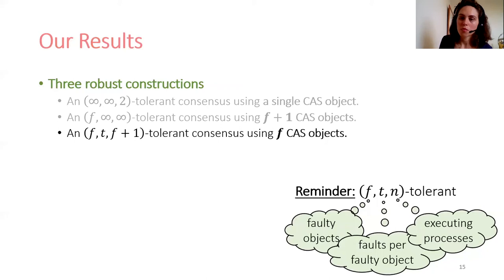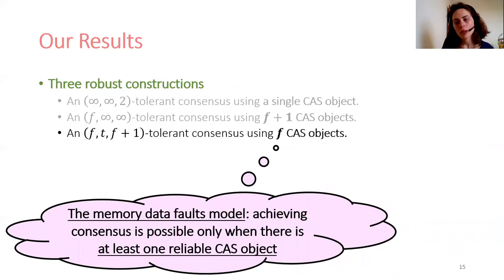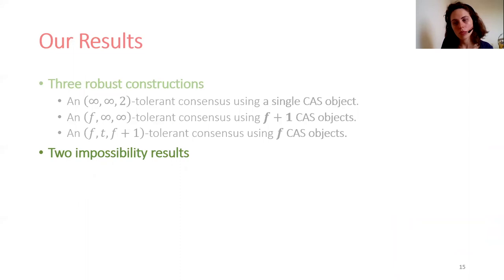For every bound T on the number of faults per faulty object, we also constructed a reliable consensus object using F CAS objects — all may be faulty — assuming there are at most F plus one processes in the system. This result beats the respective impossibility results from the memory data faults model, stating that achieving consensus is possible only when there is at least one reliable CAS object. Our construction uses F CAS objects and is reliable even if all of them are faulty.